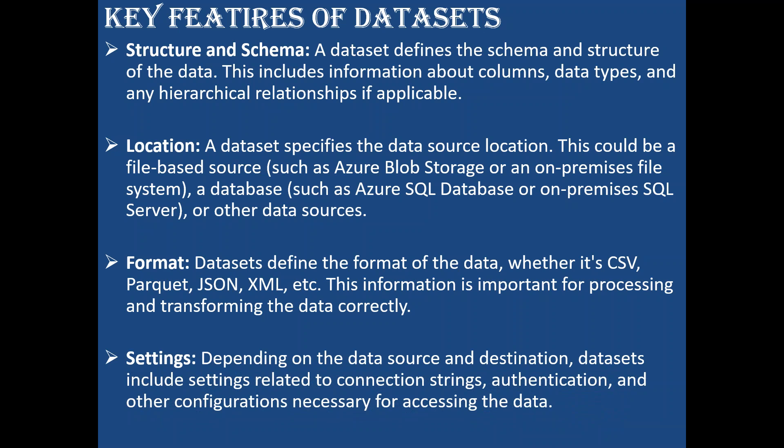Settings in a dataset depend on the data source and destination. Datasets include settings related to connection strings. For example, when writing data into Snowflake, the linked service must use SAS authentication — shared access signature. So you will also have a dependency on what kind of authentication to use when reading the data. That's why settings are very important. It defines the data source and destination, the type of authentication, and other configuration necessary for accessing the data.